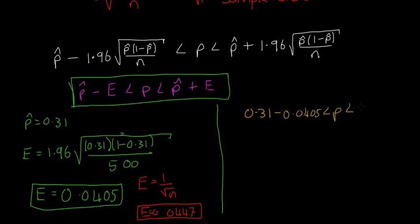And 0.31 plus 0.0405. Sorry, I had to squeeze that in a little bit. So our new answer, our correct answer is 0.2695 less than p, less than 0.3505.